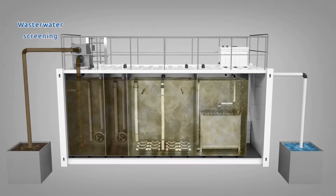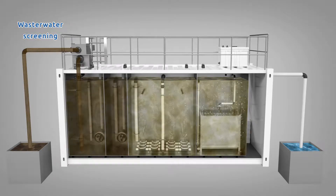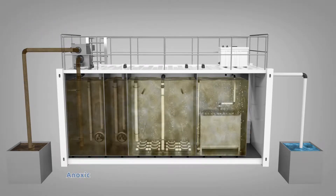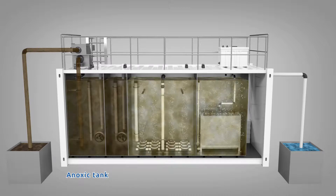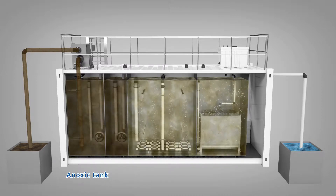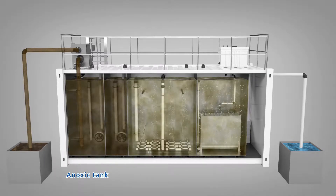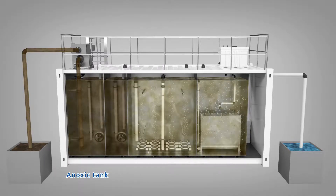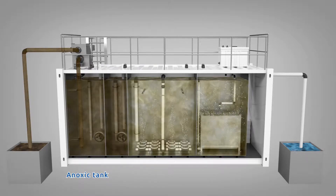The first step of the treatment process is the mechanical screening of incoming wastewater. The screened wastewater flows into the anoxic tank, where a submersible mixer blends the screened wastewater with mixed liquor returning from the MBR tank to achieve the desired level of denitrification. In the absence of dissolved oxygen, nitrate is converted into nitrogen gas in the tank.